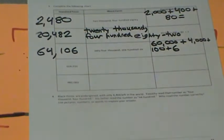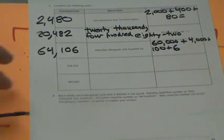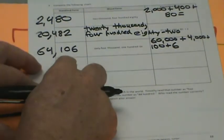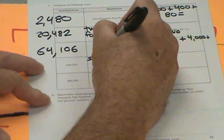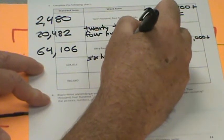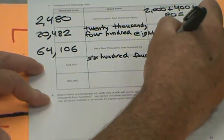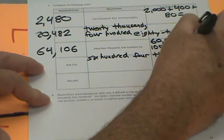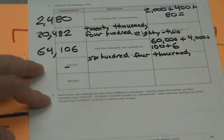In this row, they're showing us the standard form: 604,016. Let's write it out in word form: six hundred four thousand, sixteen.